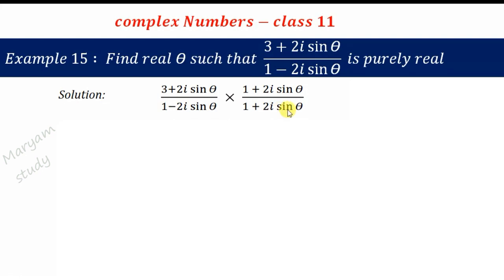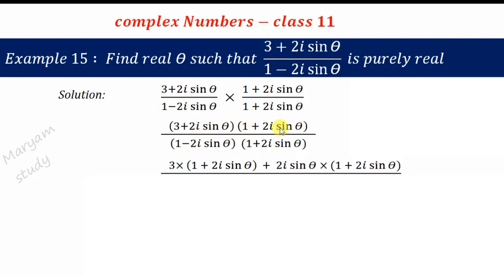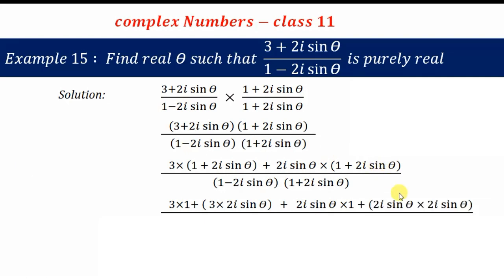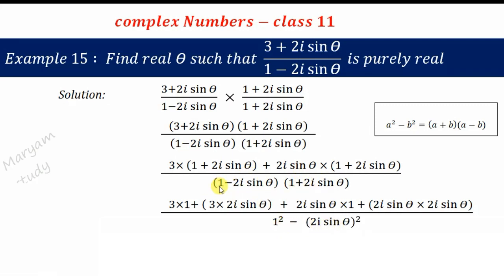We multiply out the brackets. First multiply 3 with the bracket, then multiply 2i sinθ with the bracket. For the denominator, we use the identity a² − b² = (a + b)(a − b), where a = 1 and b = 2i sinθ, giving us 1² − (2i sinθ)².